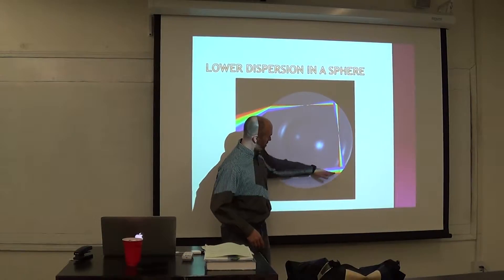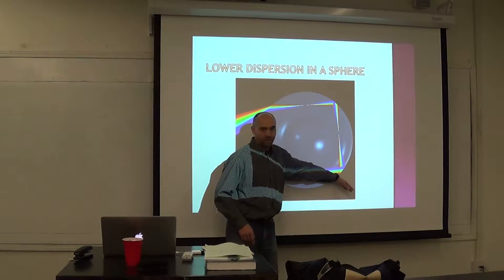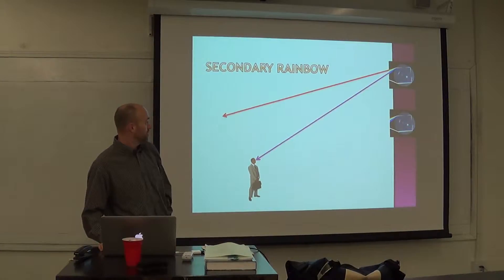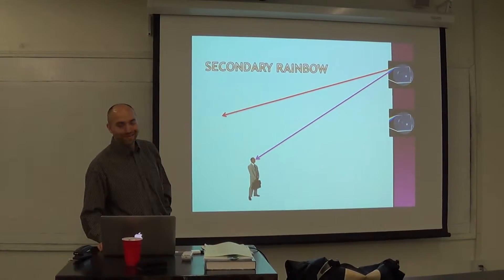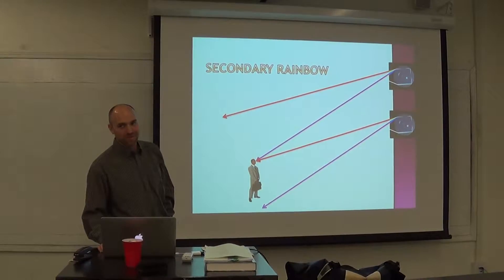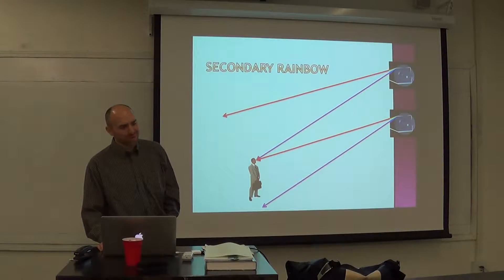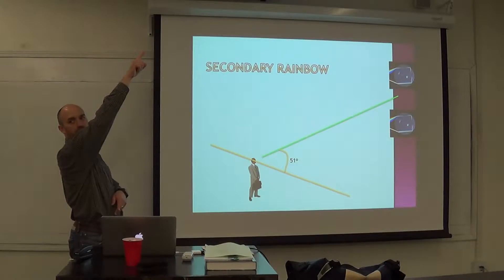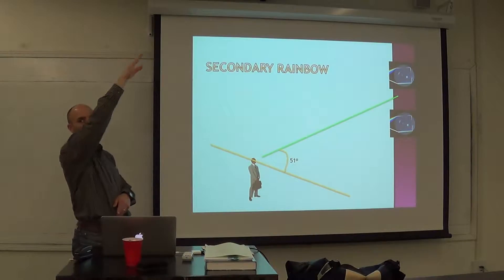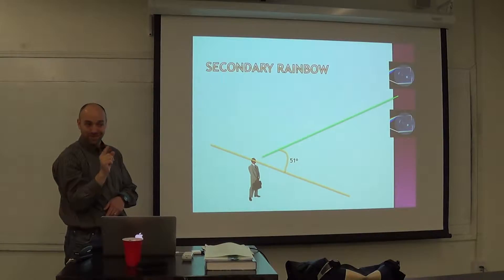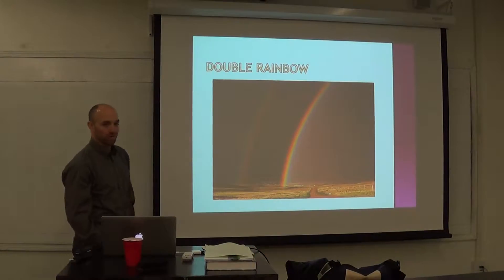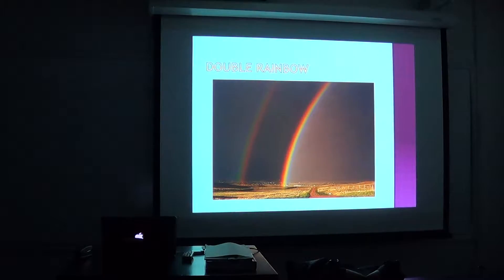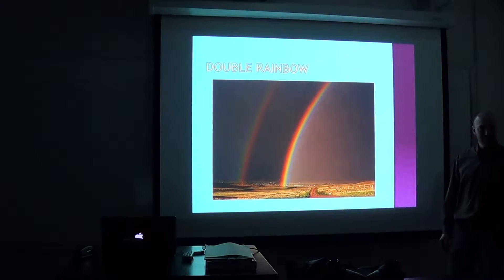The end result is: from the upper part of the rainbow you see purple, and from the lower part you see red. That's exactly the opposite of the primary rainbow. That one's at 51 degrees, the other one's at 42 degrees. We're talking about two different rainbows - one is higher than the other. Have you ever seen a double rainbow? They exist sometimes. Notice the order of the colors is flipped.